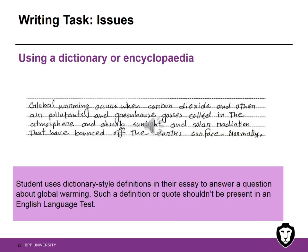In the next example, the student uses dictionary-style definitions in their essay to answer a question about global warming. Such a definition or quote shouldn't be present in an English language test — we're looking for the student to express their own point of view. For instance: 'Global warming occurs when carbon dioxide and other air pollutants and greenhouse gases collect in the atmosphere and absorb light and solar radiation.' This definition is quite scientific and is definitely not the work of the student.